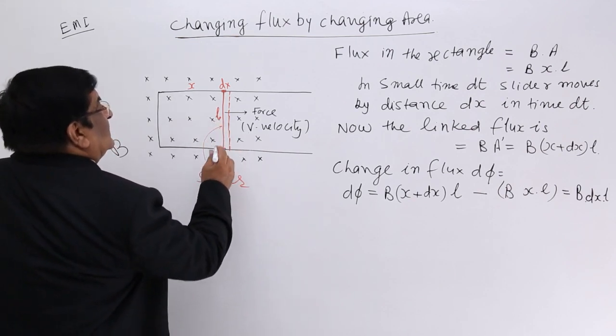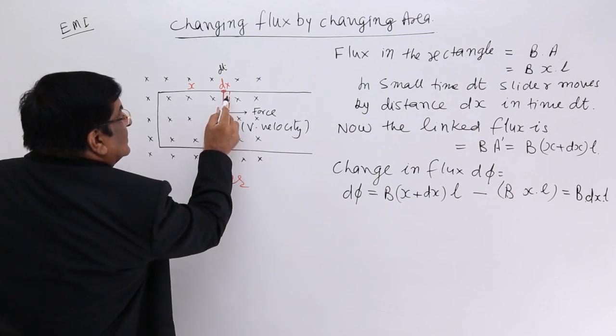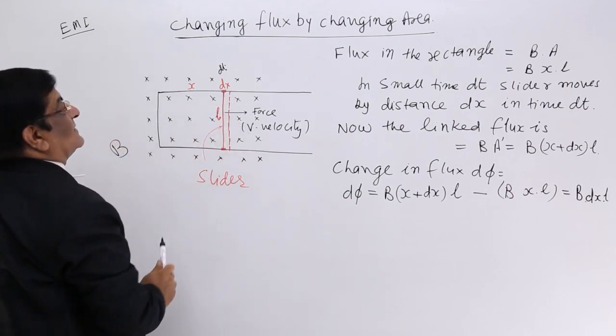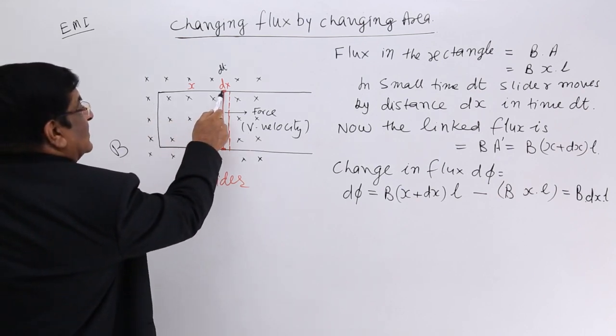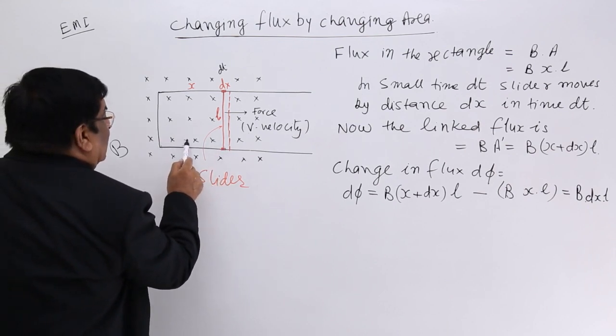Now after a very small time dt this position changes to this new position, it is away by a distance dx. Earlier from this end, this slider was at a distance of x.